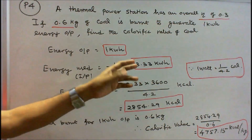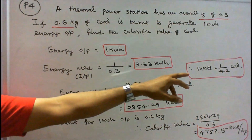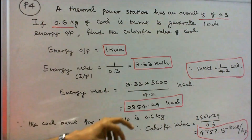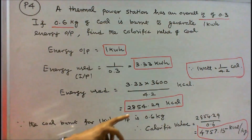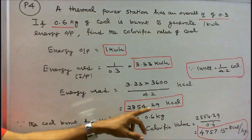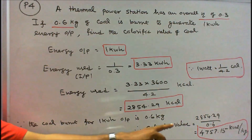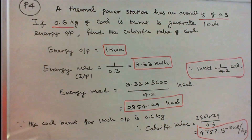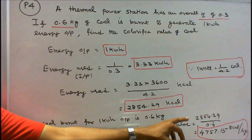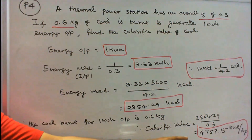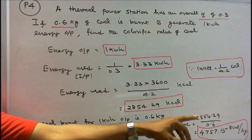We have to convert kilowatt-hours into kilocalories. We know that 1 watt = 1/4.2 calories. Therefore, energy used in kilocalories = 3.33 × 3600 ÷ 4.2 = 2854.29 kilocalories. Since the coal burnt for 1 kilowatt-hour output is 0.6 kg, the calorific value of coal = energy used ÷ 0.6 = 2854.29 ÷ 0.6 = 4757.15 kilocalories per kg.